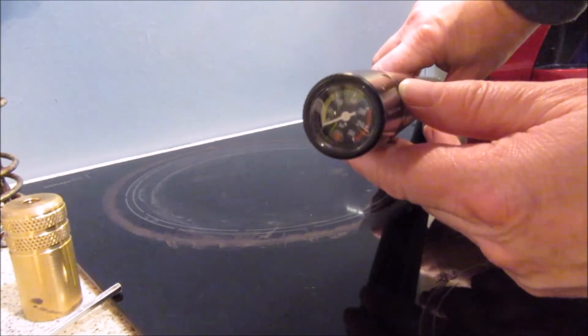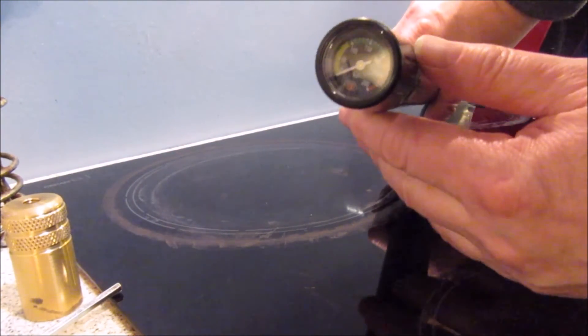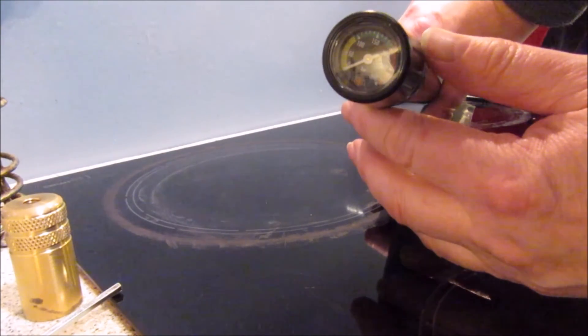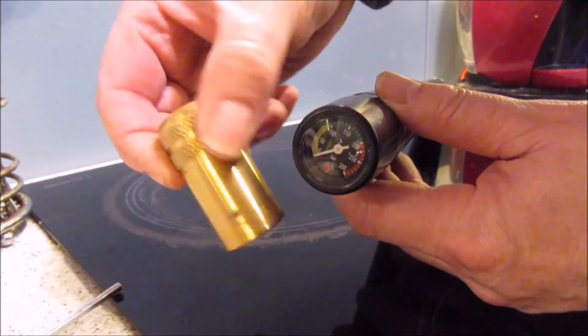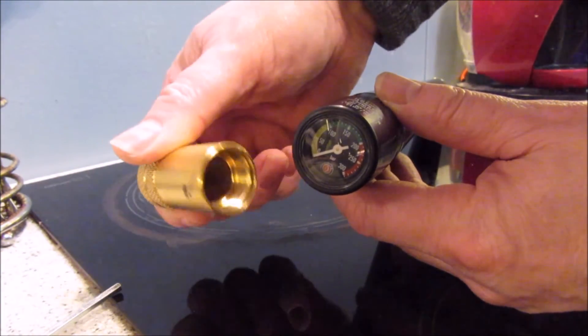As you can see it's now showing empty, so that's how you release the pressure on a Hatsan air tube using the supplied air release valve.